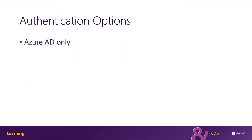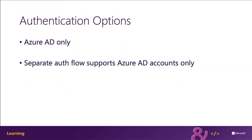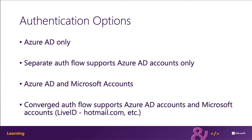Microsoft Graph supports two options to authenticate. One option is with Azure Active Directory only, or a work and school account. And the other option is converged auth, which means that you can either use Azure AD or a Microsoft account.